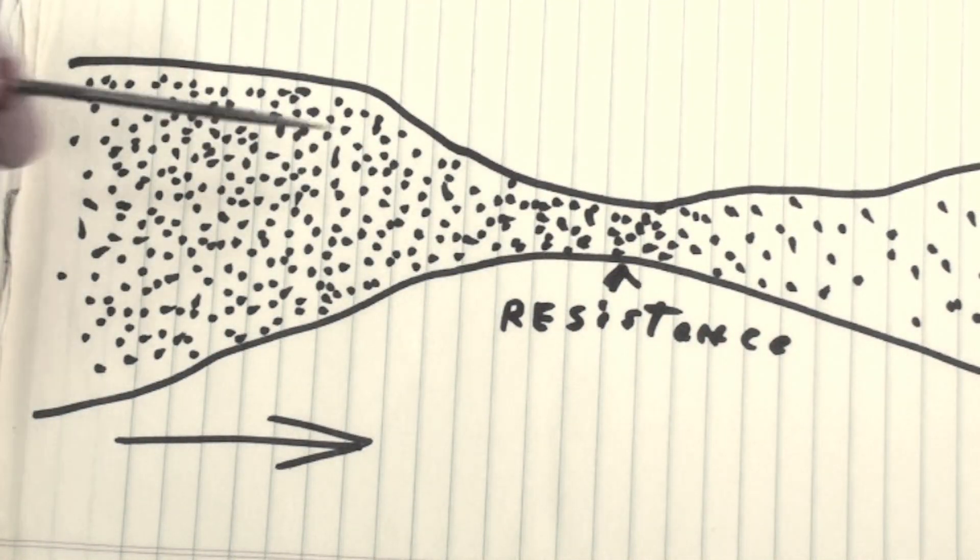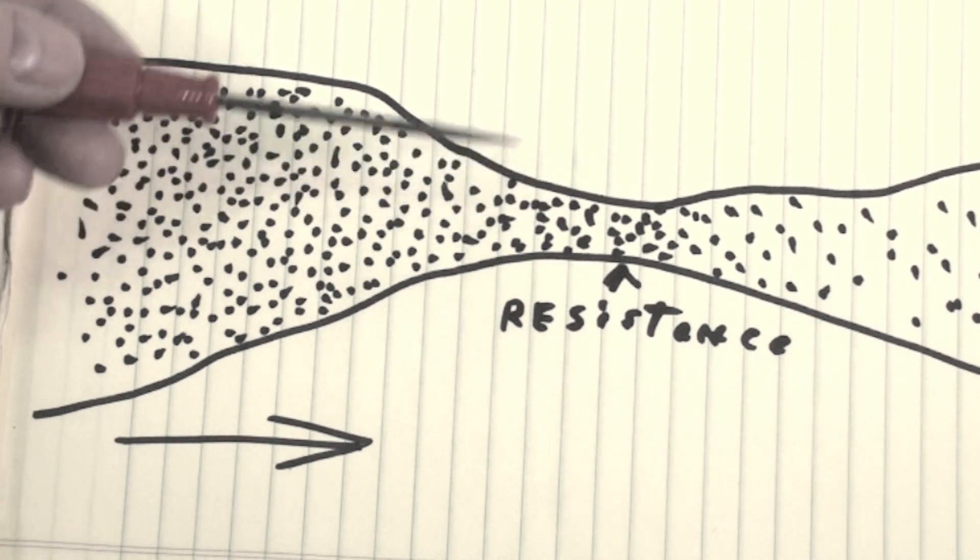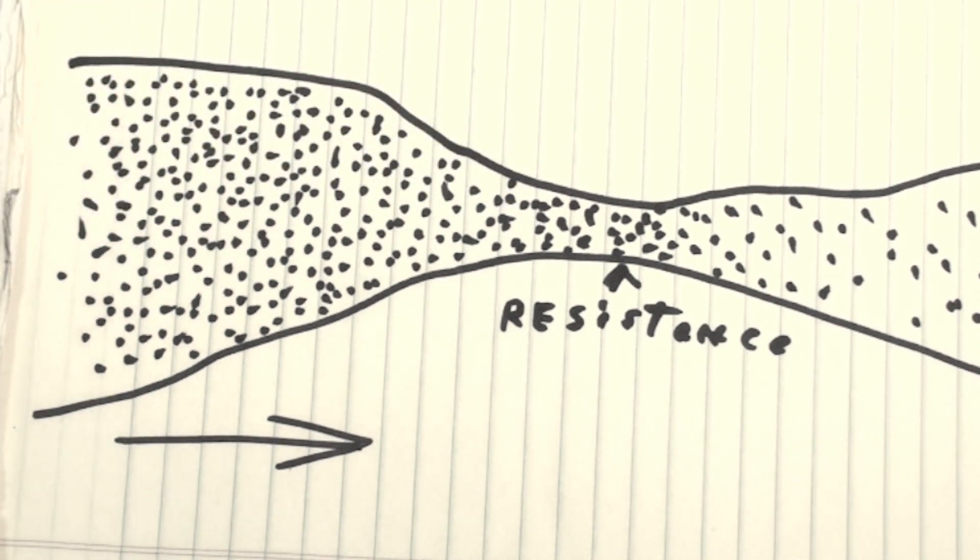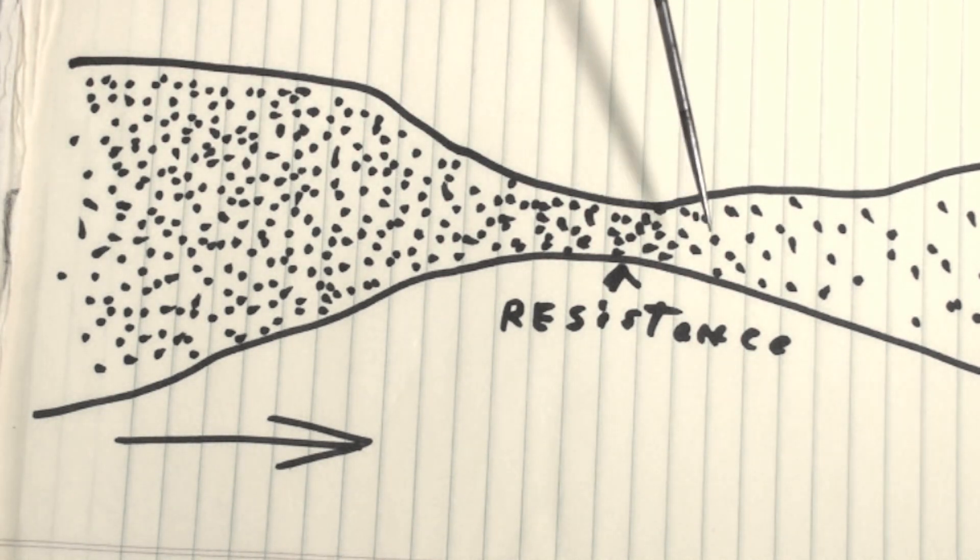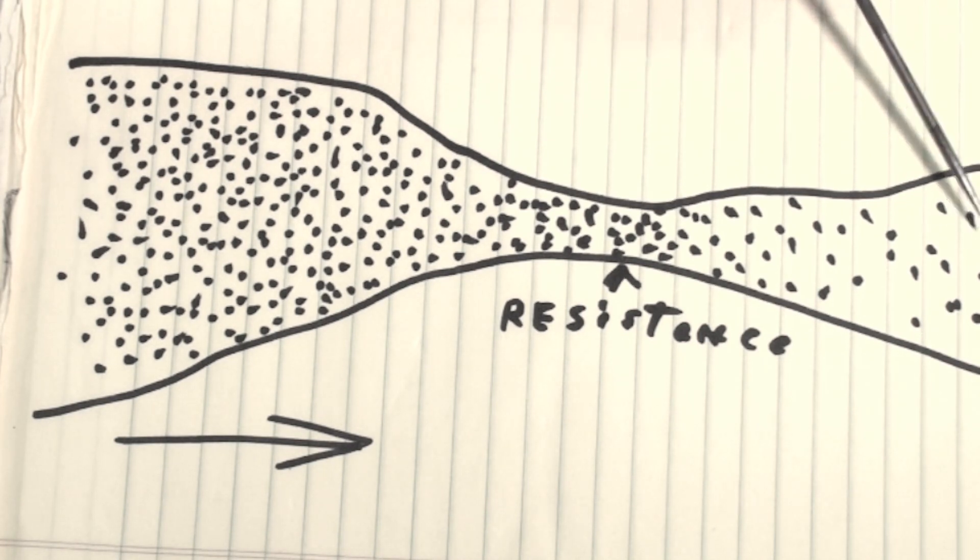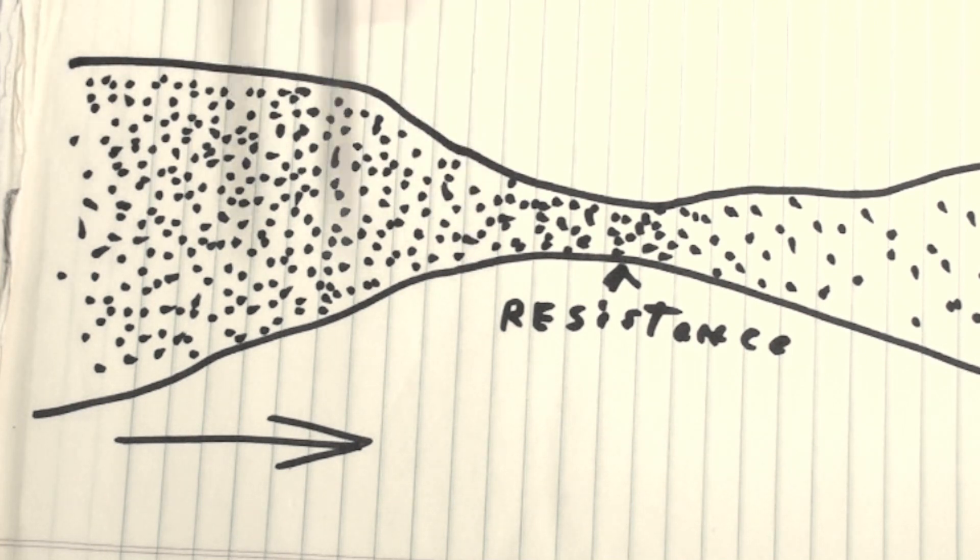When they do that, they're going to create heat. So the more that try to go through here, the more heat gets dissipated from the friction of these runners bumping into each other and bumping into the walls. But the end result is less runners make it through than started out.